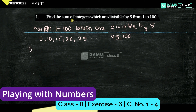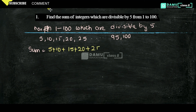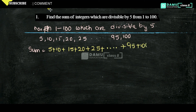So the sum will be equal to 5 plus 10 plus 15 plus 20 plus 25 and so on, plus 95 plus 100. Here you can take 5 as a common factor.